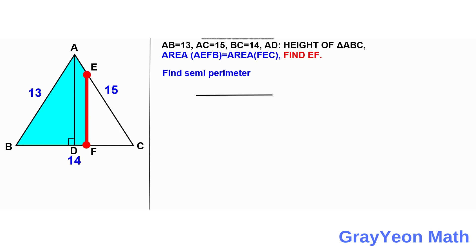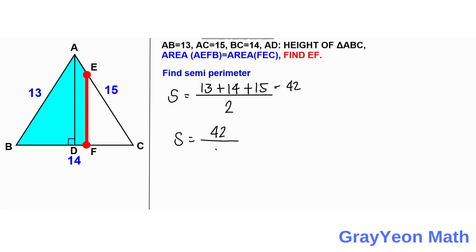So first thing that we need to do is we need to find the semi-perimeter of this triangle. For the semi-perimeter, S is equal to 13 plus 14 plus 15 over 2. So on the numerator, it gives us 42. So S is equal to 42 over 2, S is equal to 21.